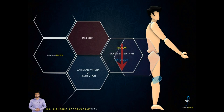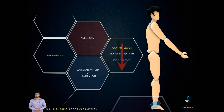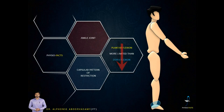For the knee joint, it is similar to the elbow joint — flexion is more affected than extension. Finally, for the ankle joint, plantar flexion is more affected than dorsiflexion. Clinically, this can be difficult to observe, because patients often present with dorsiflexion limitation, but according to Cyriax, when the capsule is involved, plantar flexion will be more affected.